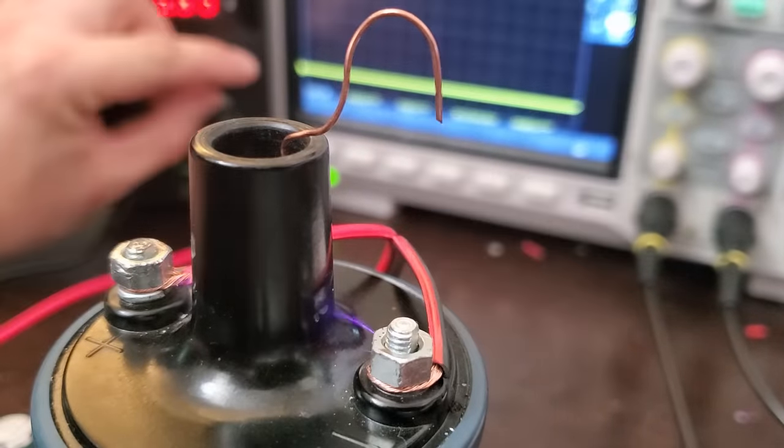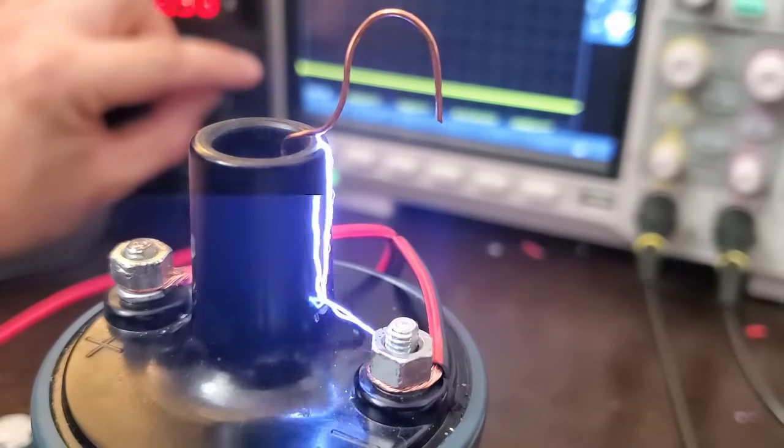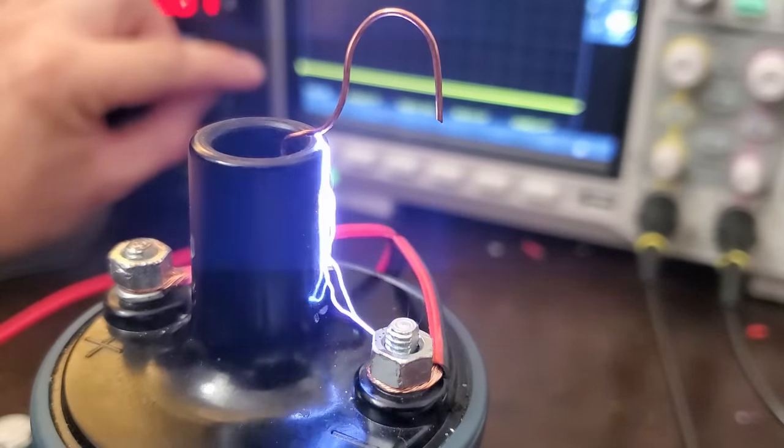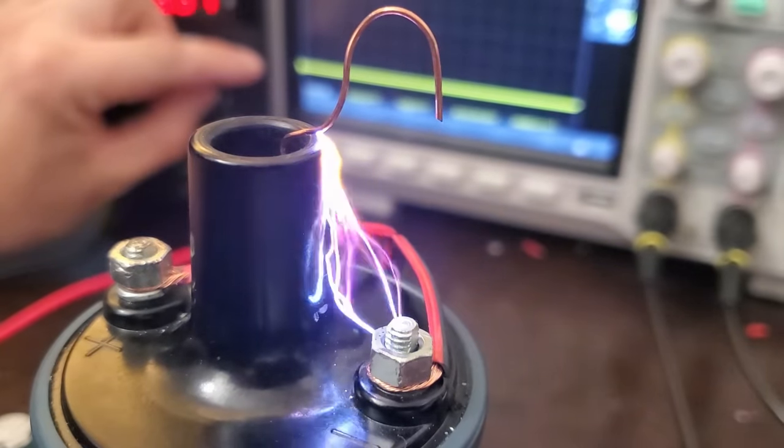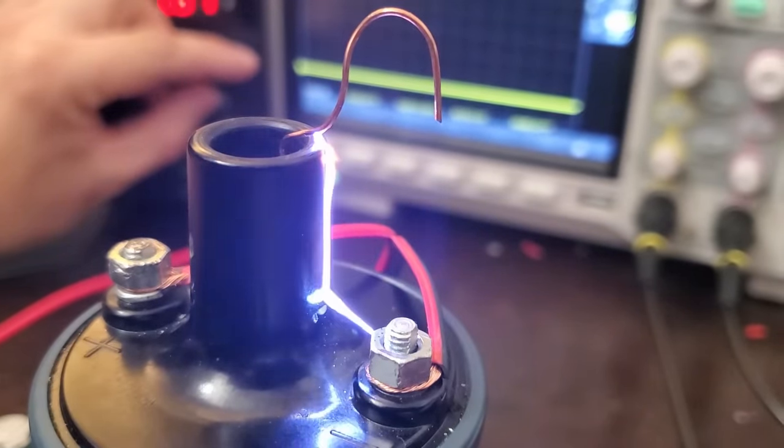The arcs were so powerful, they'd jump the insulation between the terminals, and would even occasionally jump a 1 inch gap. It's difficult to get a direct measurement, but this was probably in excess of 40,000 volts, judging by the gaps that the sparks would jump.